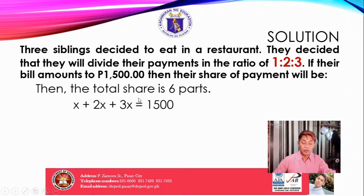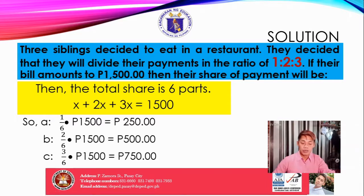That 1,500 is the total amount. For sibling 1, the share is 1 over 6 — because we have the ratio of 1 into 6 parts — multiplied by 1,500. For sibling 2, it is 2 over 6 multiplied by 1,500. For sibling 3, the share is 3 over 6 multiplied by 1,500. Getting those products: sibling A gets 250 pesos, sibling 2 gets 500 pesos, and sibling 3 gets 750 pesos.